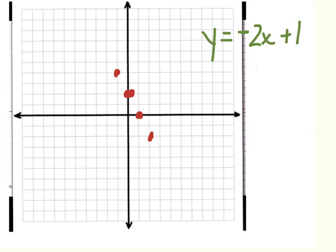All right, so first thing: I have this equation, y equals negative 2x plus 1. When you make a complete graph, the first thing you need to do is label both the x and the y-axis. You can see I just did that.